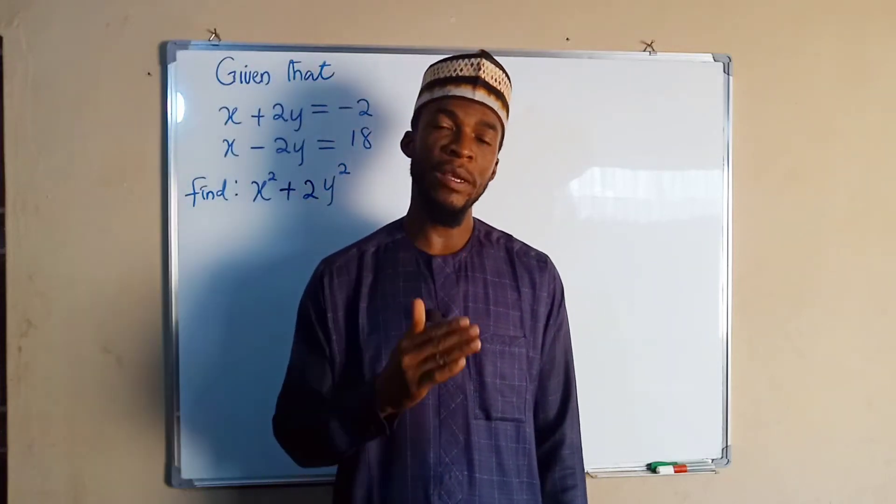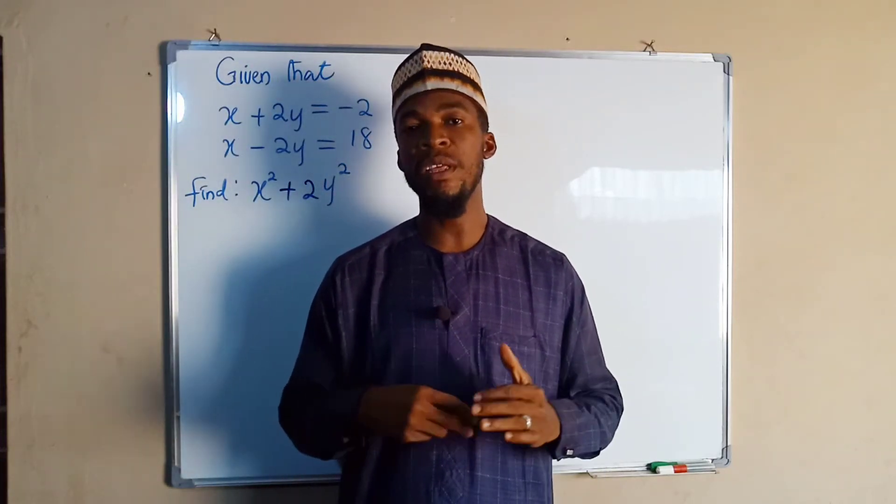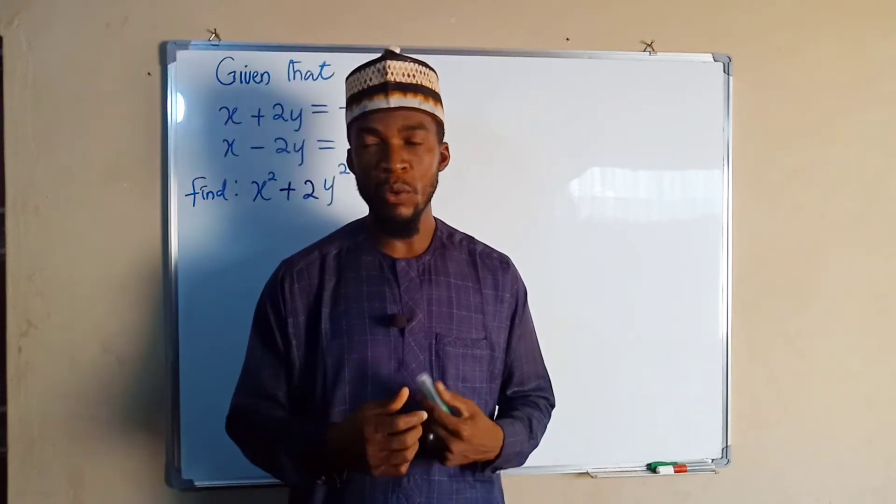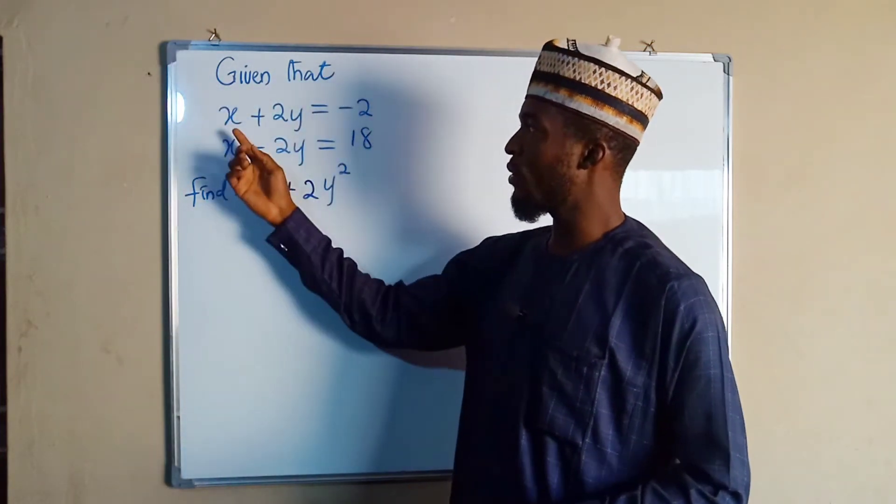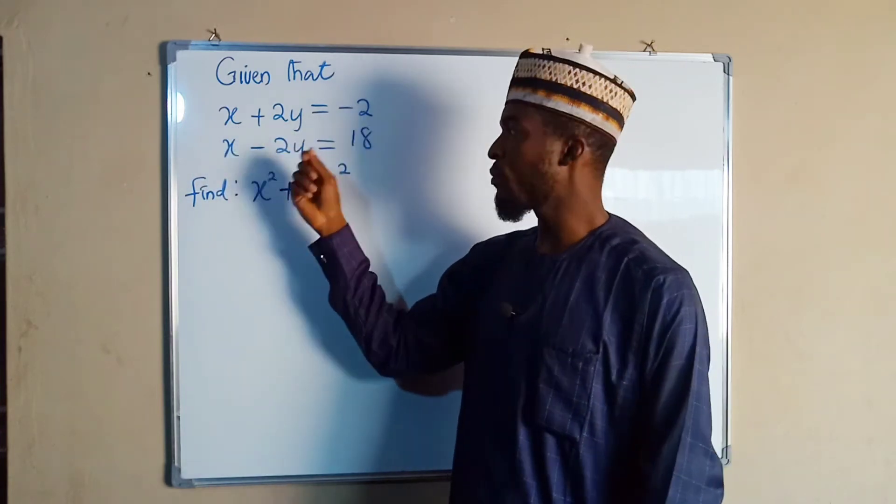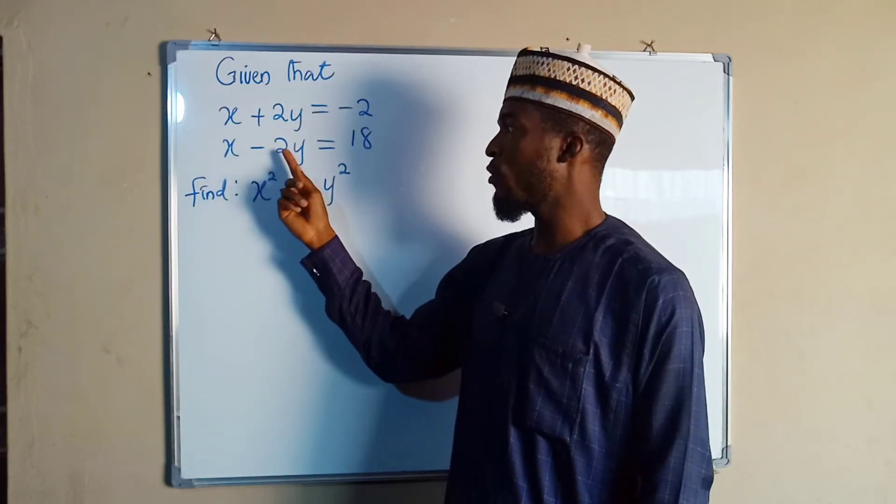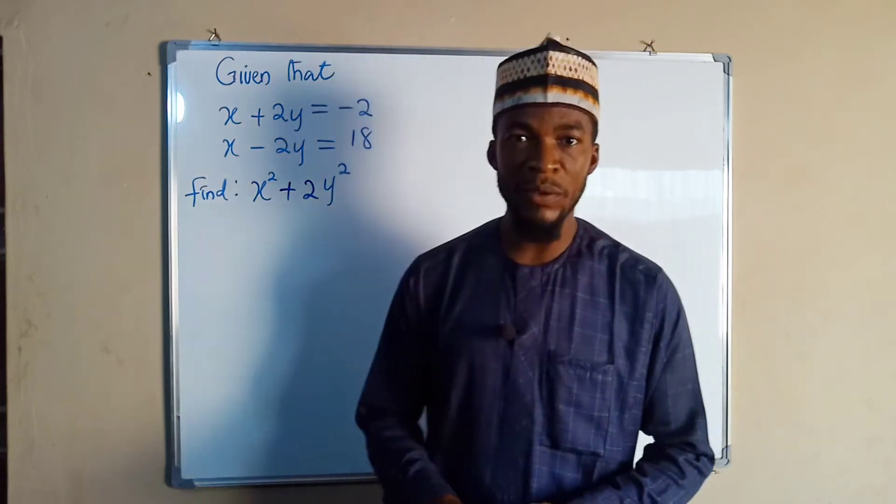Hello, good day viewers. As part of our lesson for solving simultaneous linear equations today, we want to find the value of x² + 2y² given that x + 2y = -2 and x - 2y = 18.